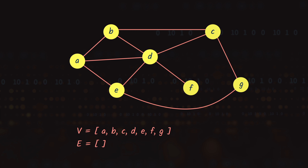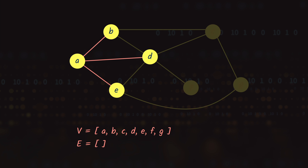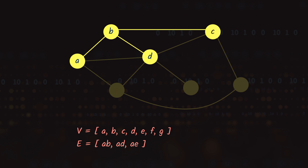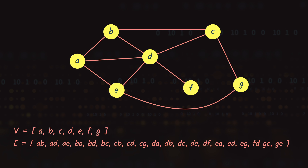For the edges: from vertex A we have AB, AD, and AE. From B we have BA, BD, and BC. And similarly we have all these different edges from other vertices.